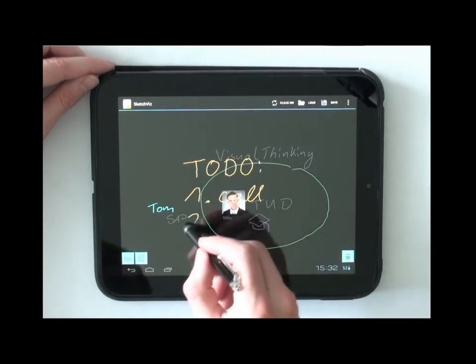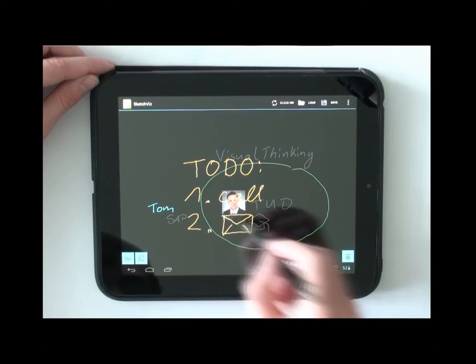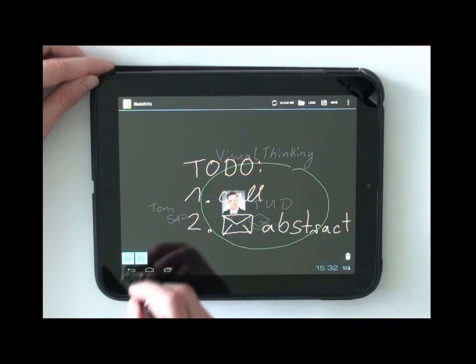In SketchViz, the annotation mode can be used like an overlay to attach notes to existing items.